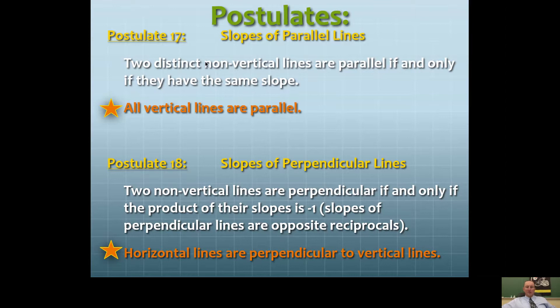So parallel lines have the same slope. Basically, postulate 18 is about perpendicular lines. Their slopes have a product of negative one. Another way to say this is their slopes are opposite reciprocals.